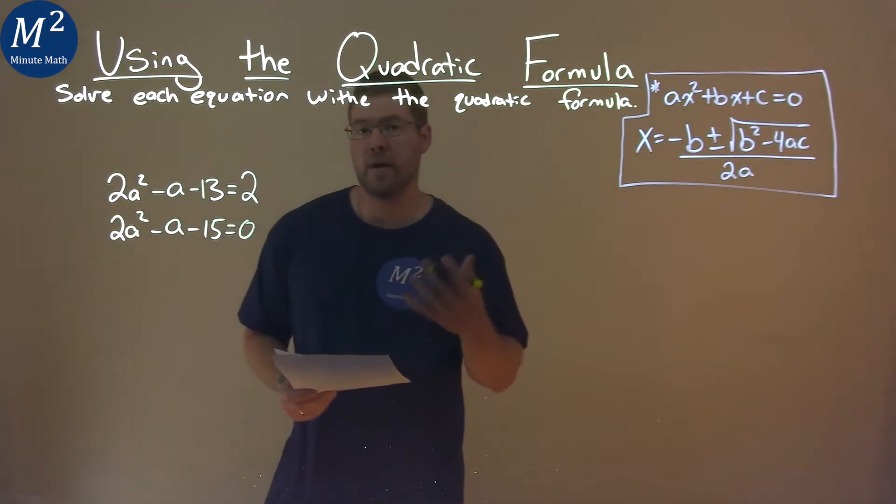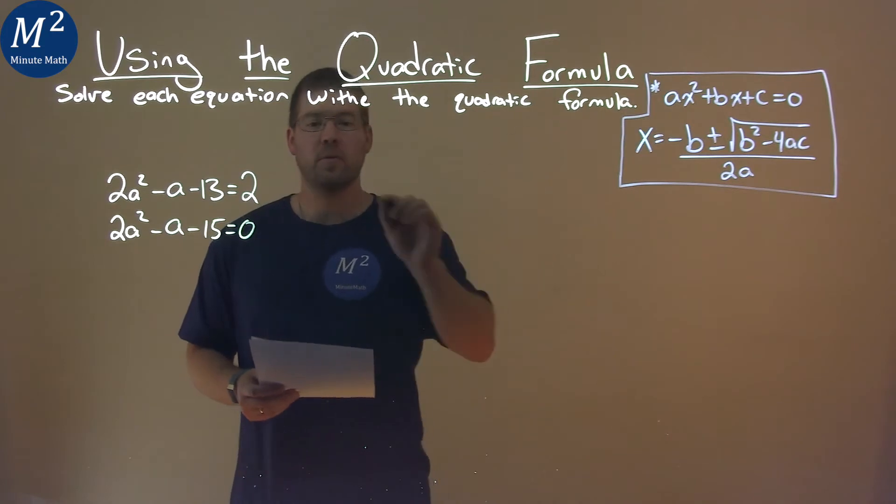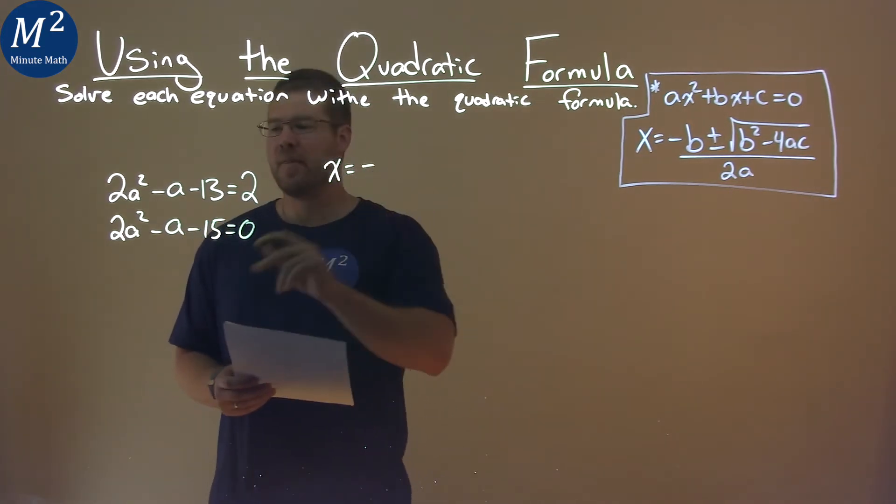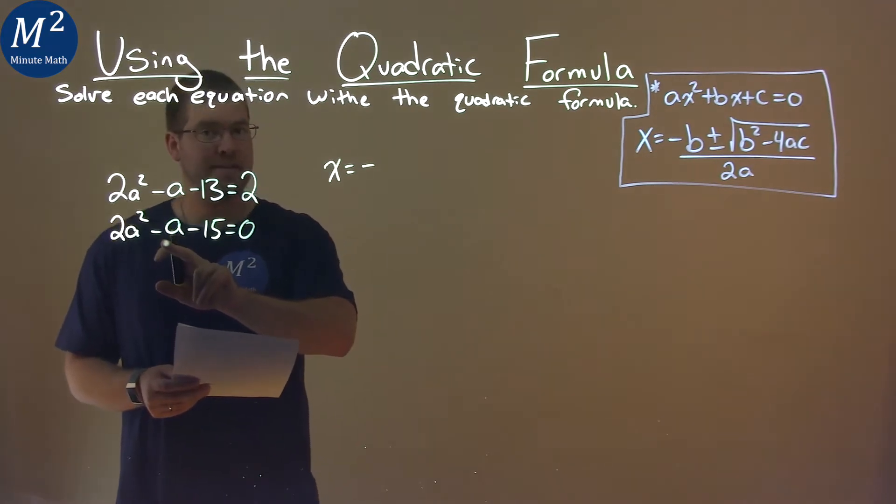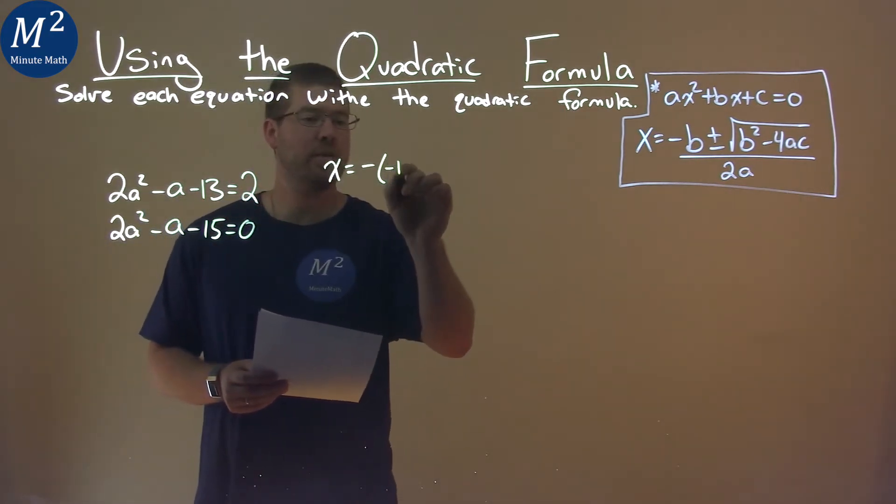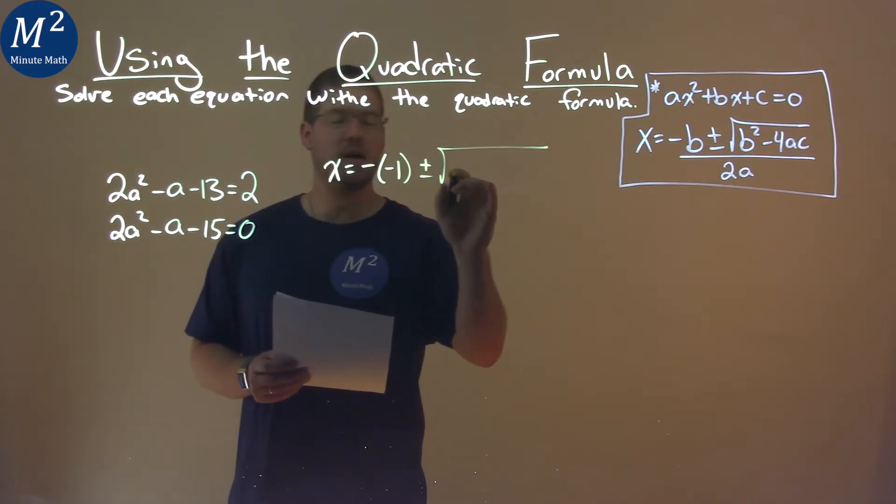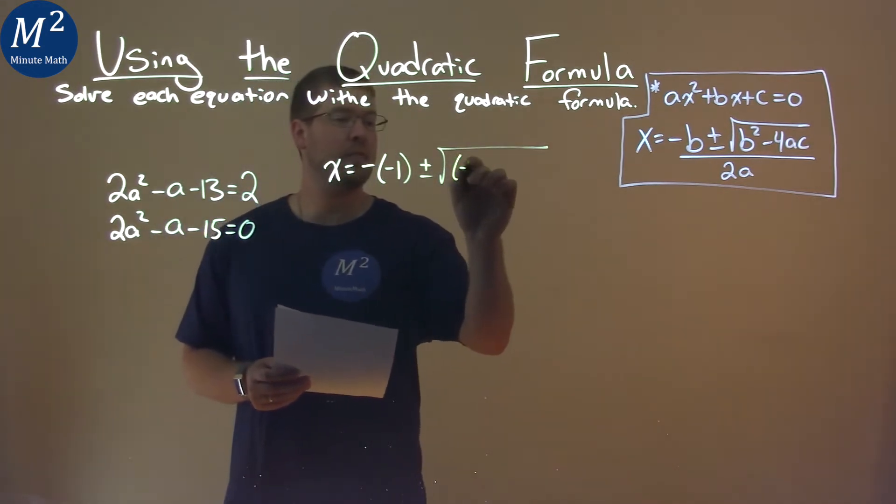Now I can use the quadratic formula. Negative b, and our b value, the coefficient in front of a, is negative 1, so don't forget the double negative here—common mistake. Plus or minus the square root of b squared, b being negative 1,